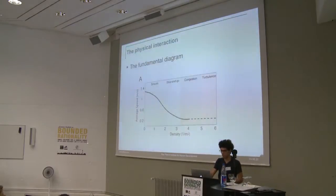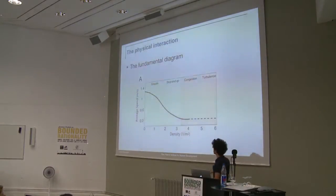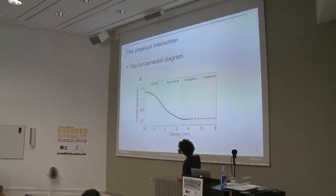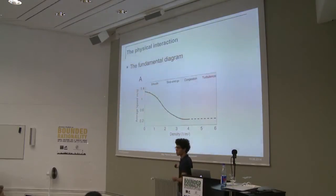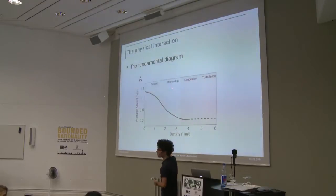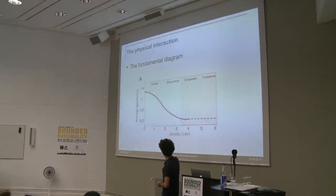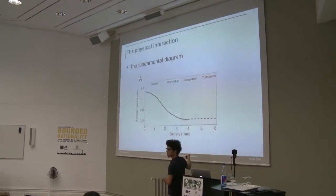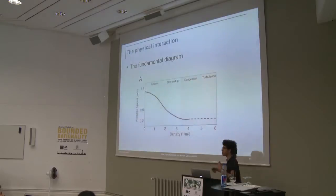A simple fundamental diagram shows a smooth flow zone, then stop-and-go waves appear. We tell managers that stop-and-go waves are a very useful warning pattern — they indicate the density level. If you see stop-and-go waves, try to do something to come back to the green zone; otherwise you risk entering the dangerous turbulence regime.